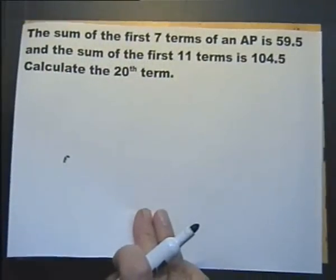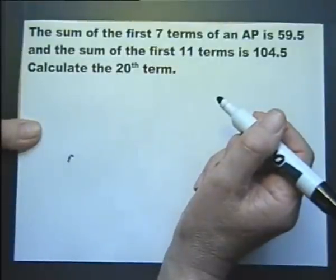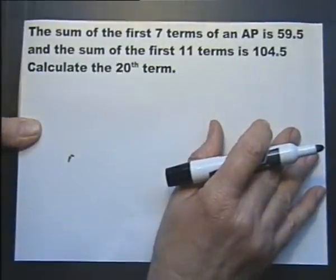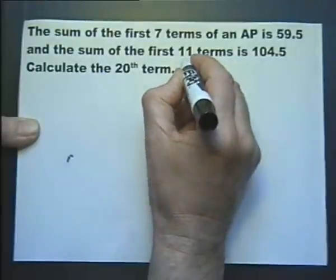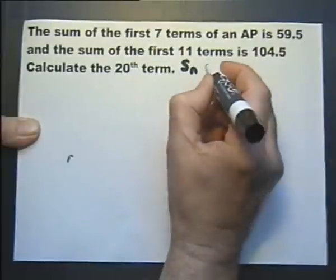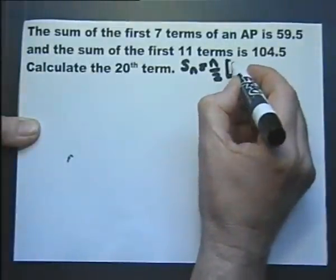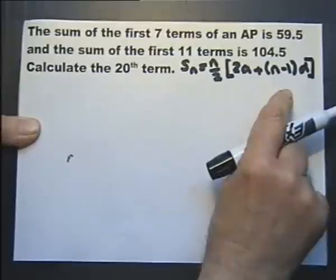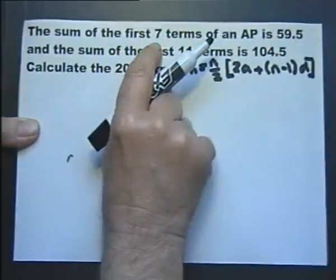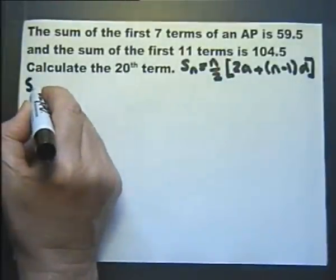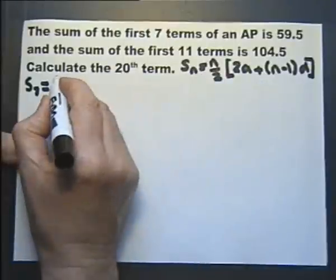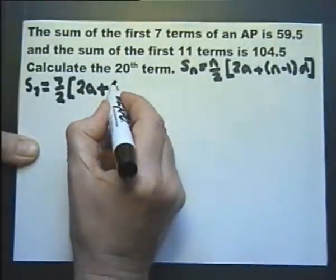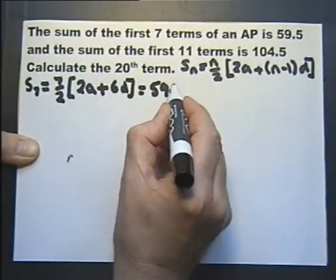Now let's try the next problem. The sum of the first 7 terms of an arithmetic progression is 59.5, and the sum of the first 11 terms is 104.5. Calculate the 20th term. Using the sum formula with n equals 7: the sum equals 7 over 2 times (2A plus 6D), and that equals 59.5.